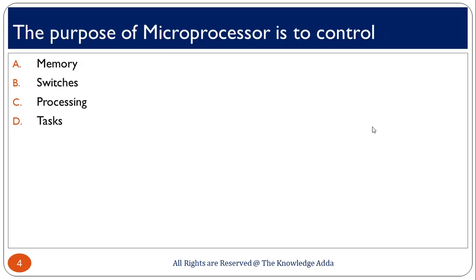The second question is: what is the purpose of a microprocessor? A microprocessor is used to control the process of memory, because we fetch data from memory and store data back into memory. So the microprocessor generally controls the operation of memory, and the correct option is A.